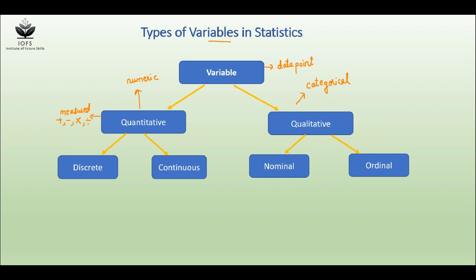Quantitative data are further divided into two types: one is discrete and the other is continuous.